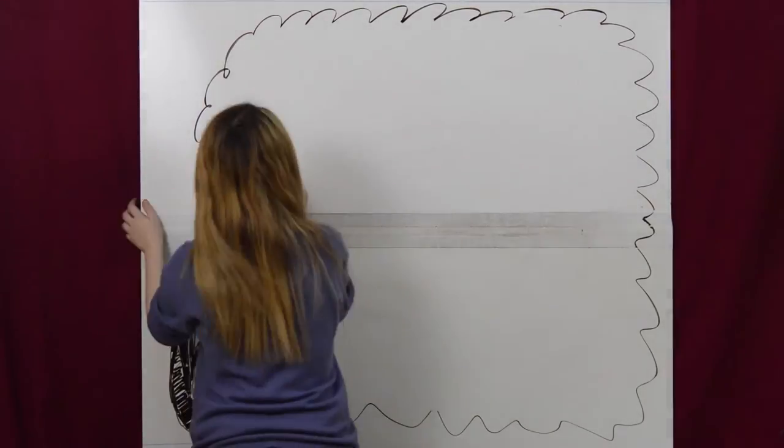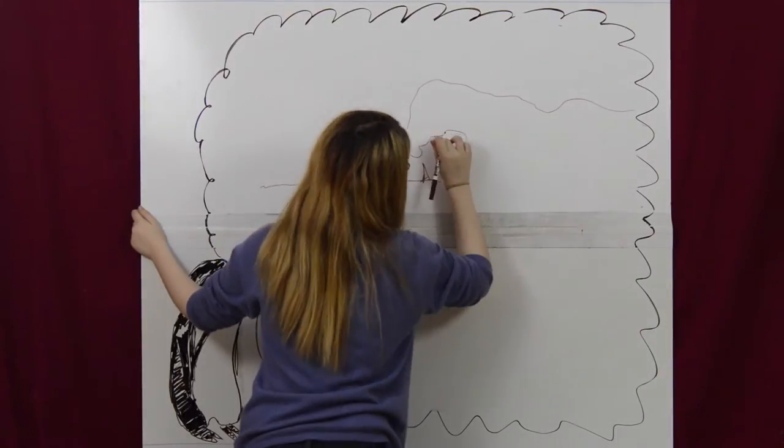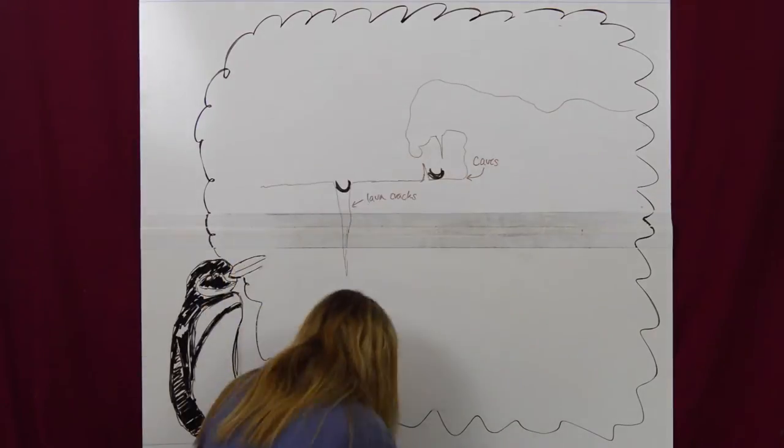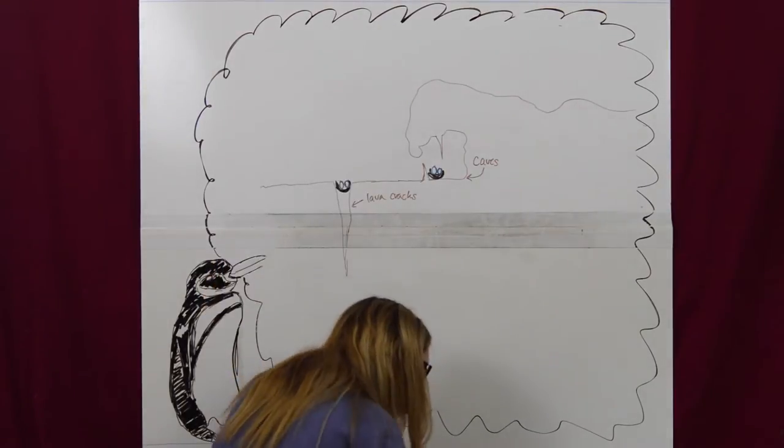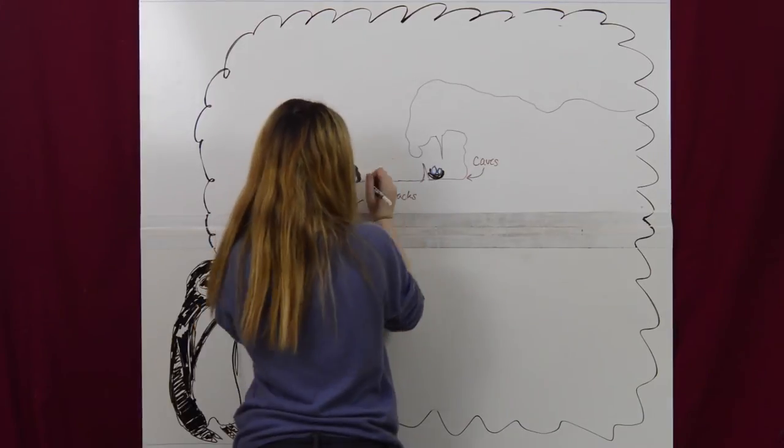They make their nests in cracks, caves, and depressions in the island's lava flows and feed near the shore in cool oceanic waters where there is an abundance of prey year-round. Once the eggs are laid, both male and female care for the young, including incubating the egg, fasting, and foraging for food.